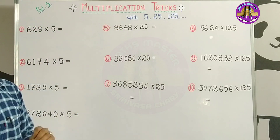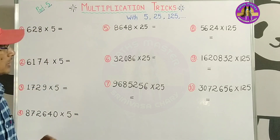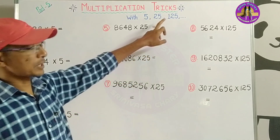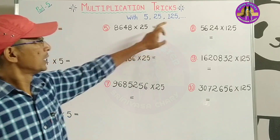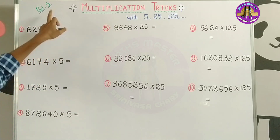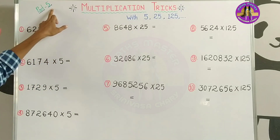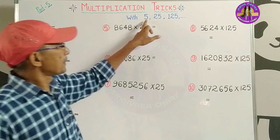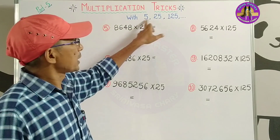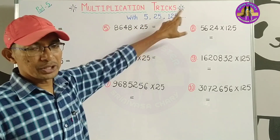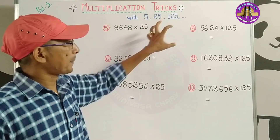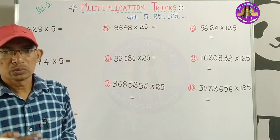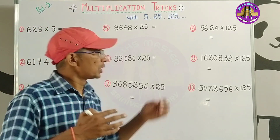In this video, we will discuss multiplication tricks. This is the last part of multiplication tricks. We will discuss 5, 25, 125, 625 — these are the powers of 5: 5 power 1, 5 power 2, 5 power 3, 5 power 4.